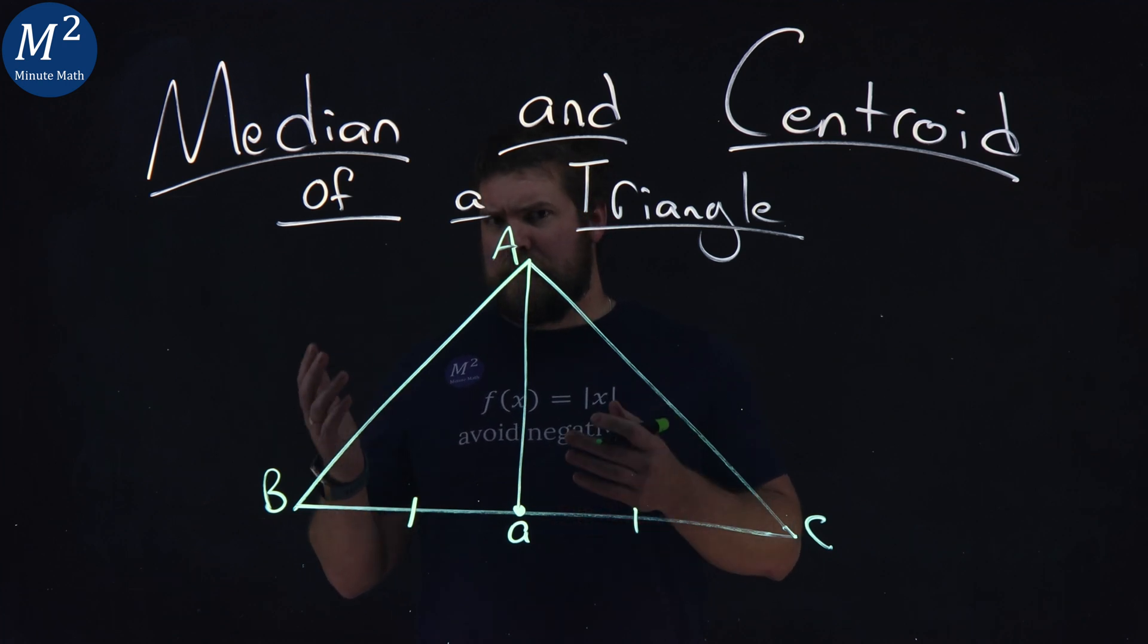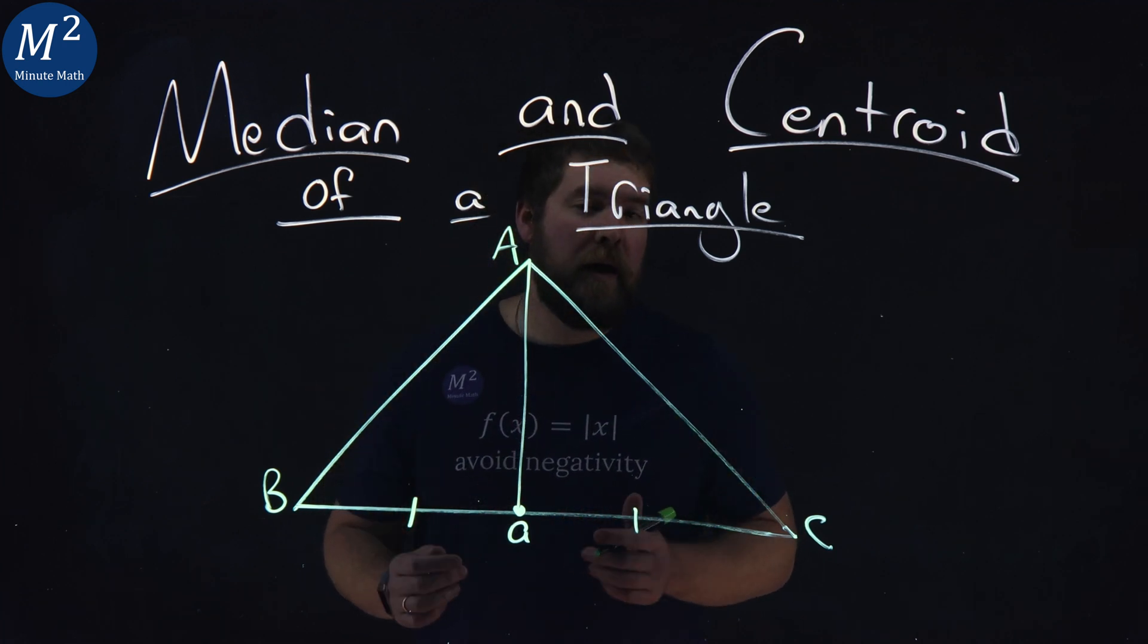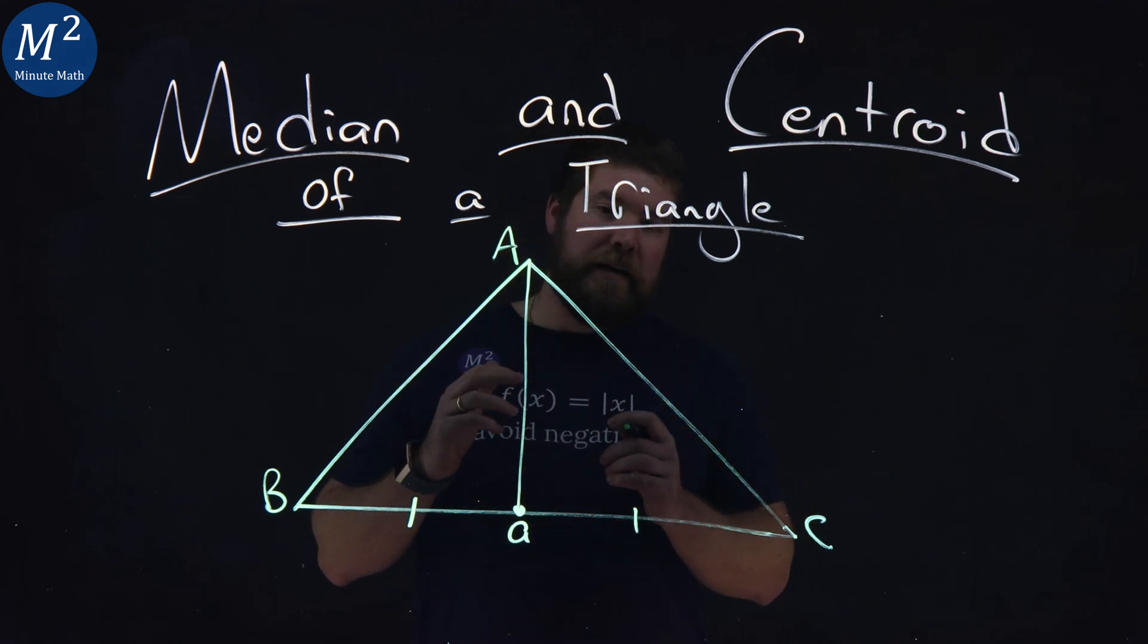Now, hopefully you're thinking and seeing, well, we found one median. Can we find two more? That's correct. There are three medians within every triangle.